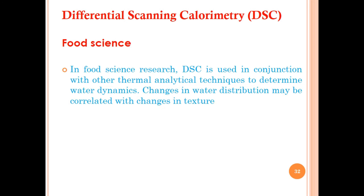In food science, DSC is also used in conjunction with other thermal analytical techniques to determine water dynamics. Changes in water distribution may be correlated with changes in texture. Water content is important in food items — if the water quantity exceeds the required amount in packed food, it creates problems and food spoilage occurs. To determine the distribution of water in food, DSC is a convenient technique for determining water dynamics in food science.